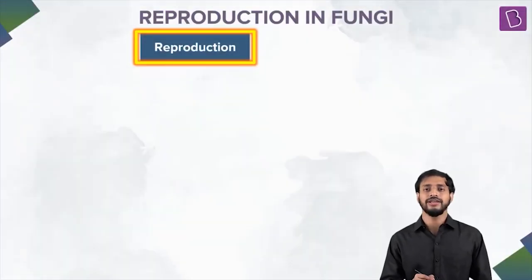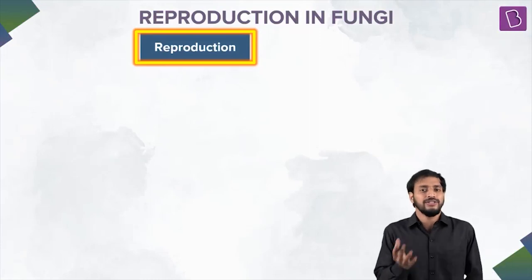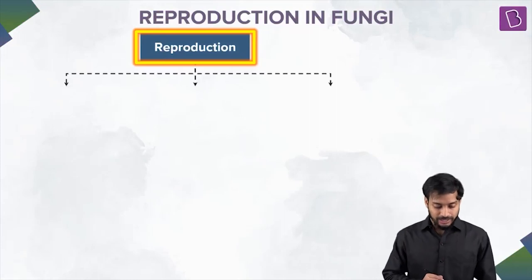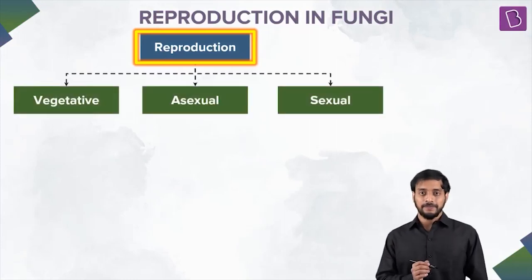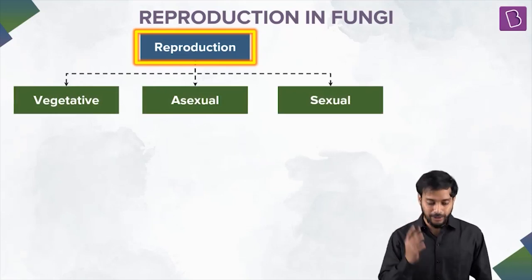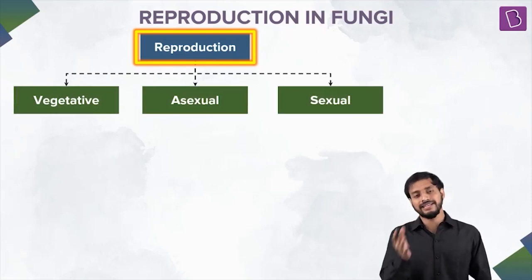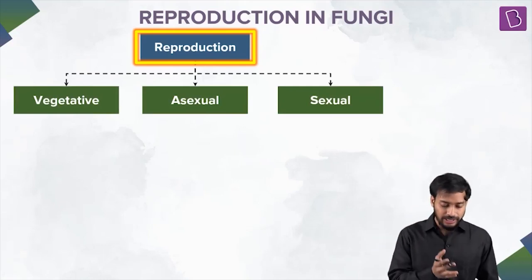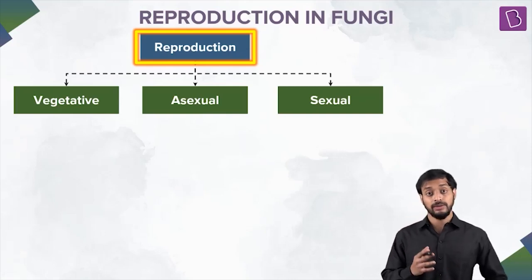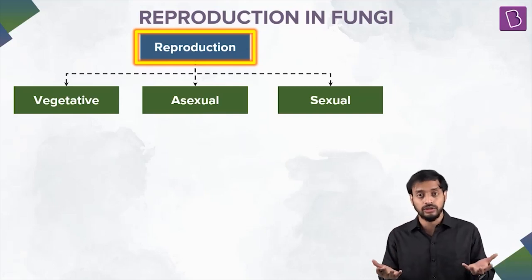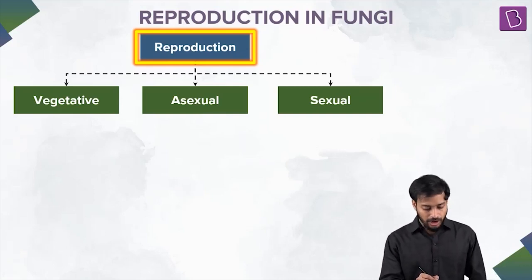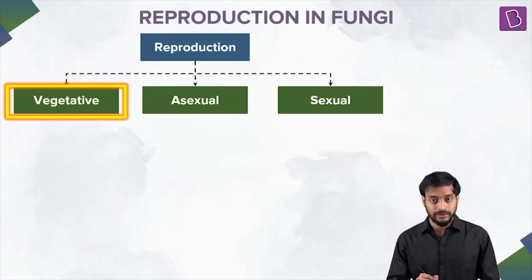So, reproduction — what do you think, how do fungi reproduce? Asexual, sexual, or maybe something else? Well, let me show you. Yes — vegetative, asexual, sexual — all of these modes are possible in fungi. There are different categories which perform vegetative, different categories which perform asexual, and some which perform sexual mode. Some can also perform both asexual and sexual.